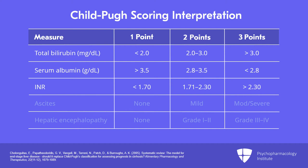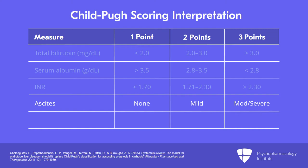Ascites is graded as none, mild, or severe — that's one, two, or three points. And hepatic encephalopathy: if there's none, you get one point; grade 1 to 2 gets two points; and grades 3 and 4 get three points. So all you do is simply add up the points.